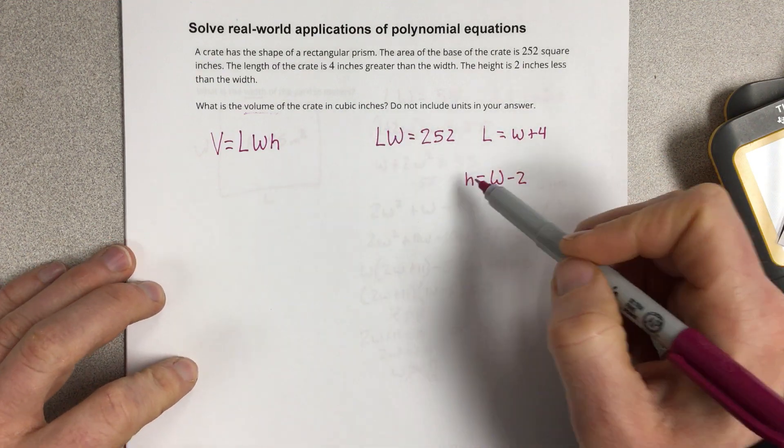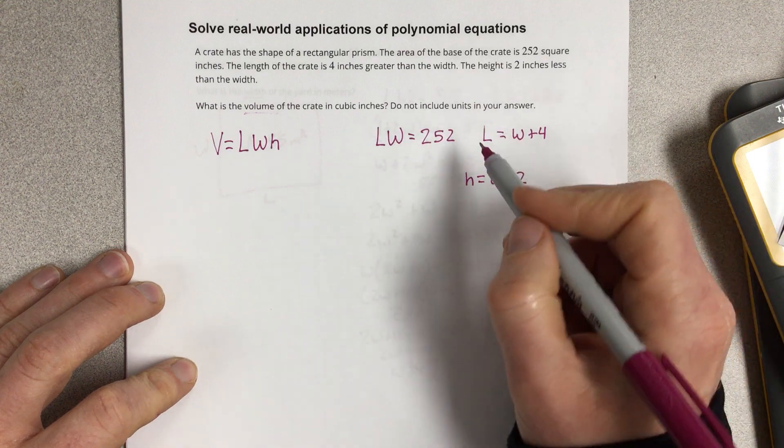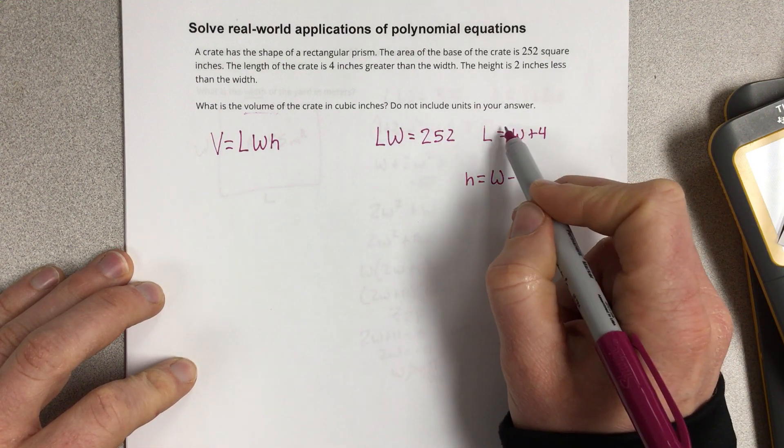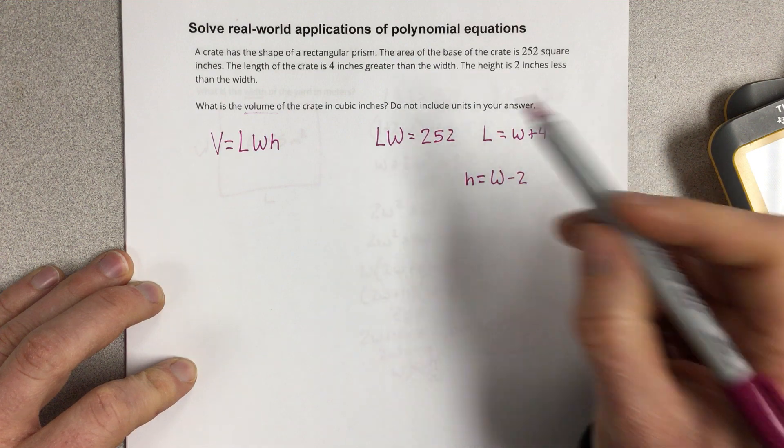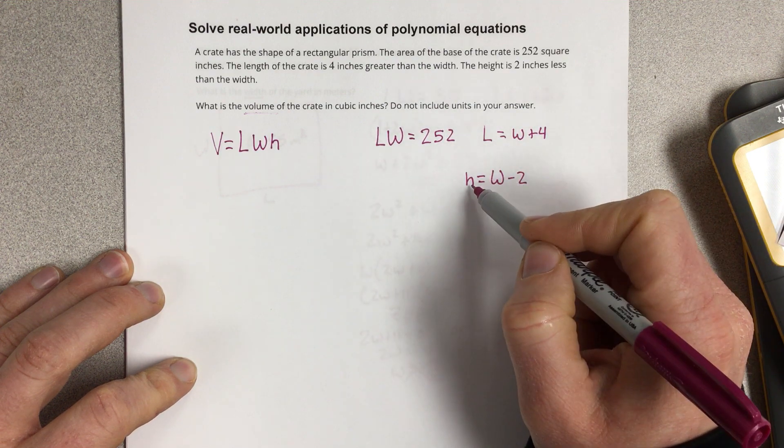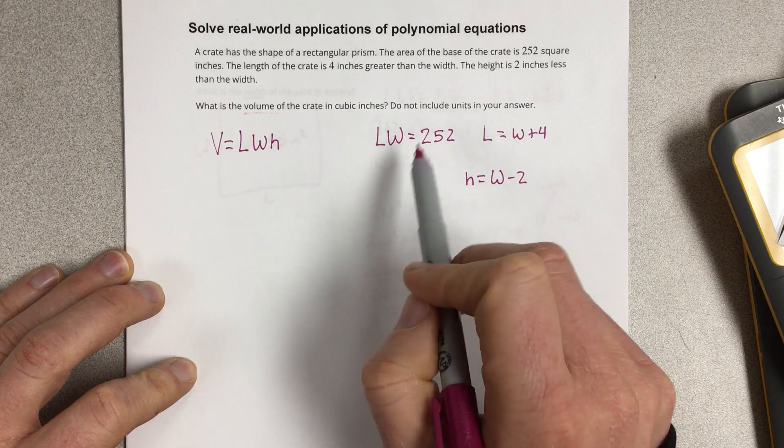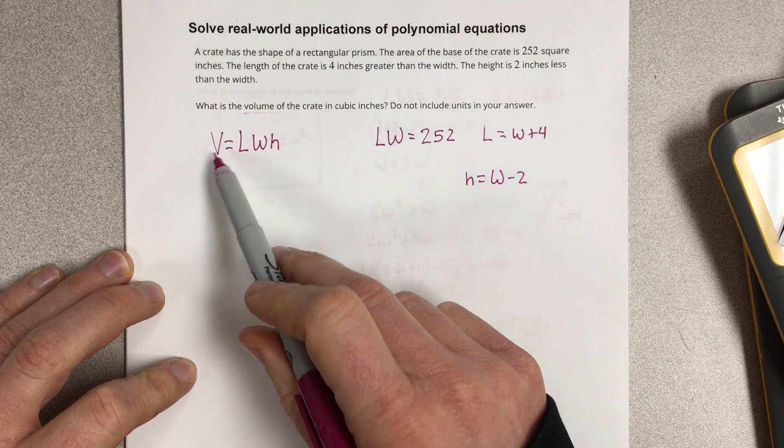So we have a lot of equations, a lot of information, but you should be able to see that we can take the length and width equation along with the length equation here and find the width. Once we know the width, we can use it to find the height. Once we know both of those, we could find the length and then multiply all those together to get the volume.